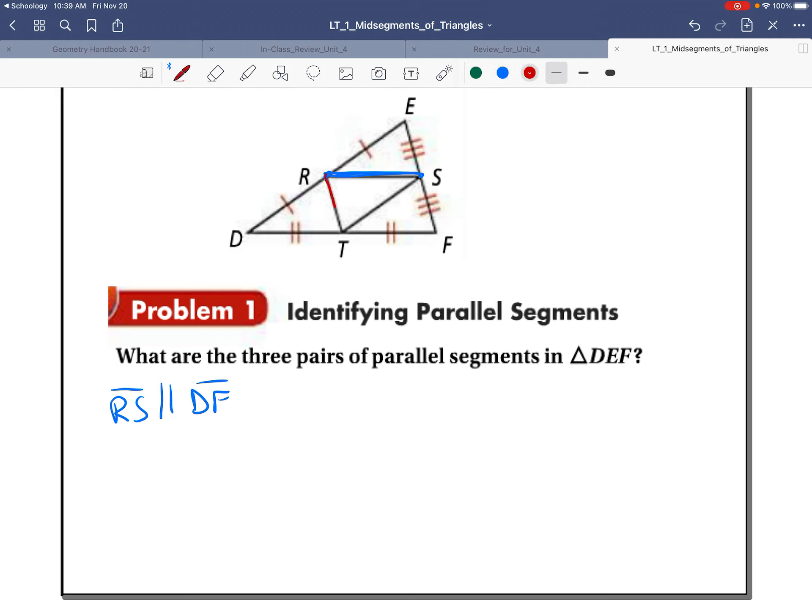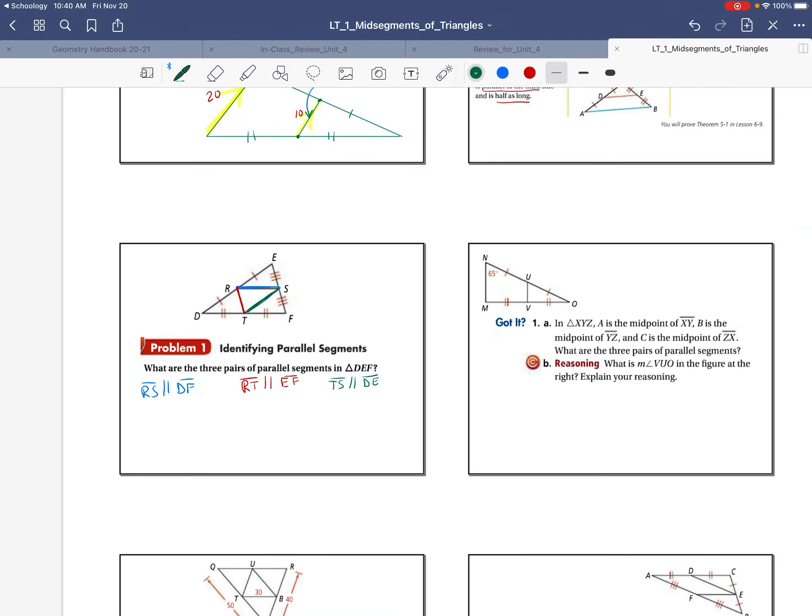We can see that RT is also a mid-segment, and RT is going to be parallel to its third side, EF. And then we know that TS is also a mid-segment, connecting two midpoints. TS is going to be parallel to its third side, DE. So those are the three pairs of parallel segments in this triangle.